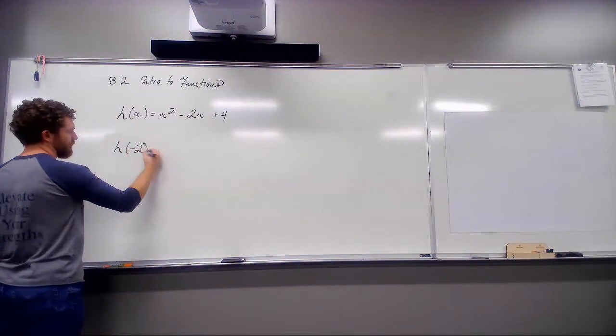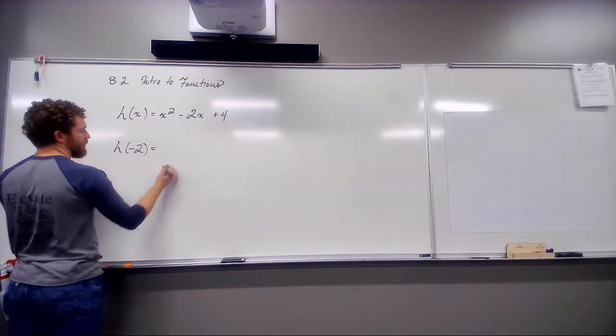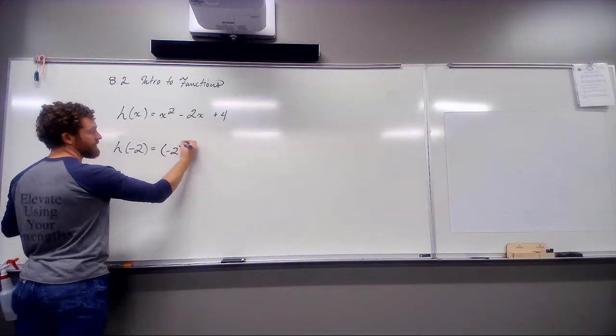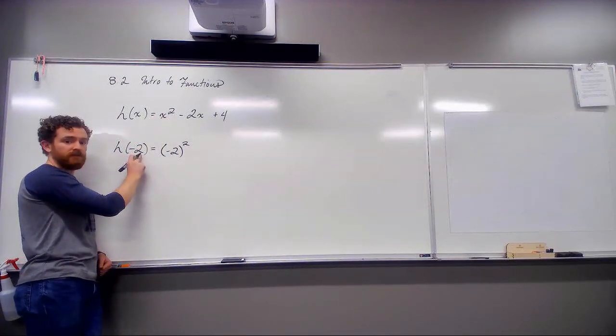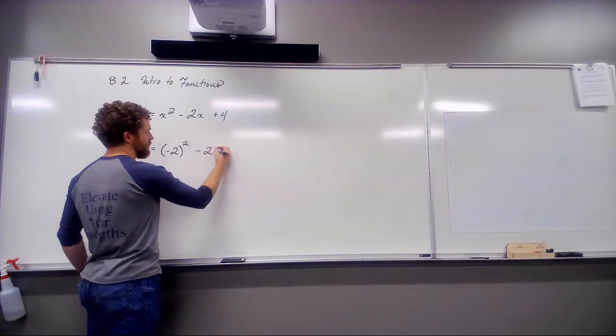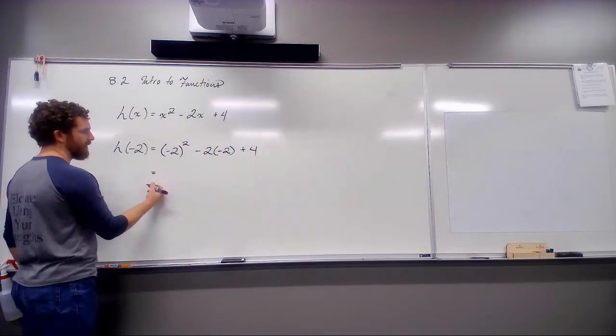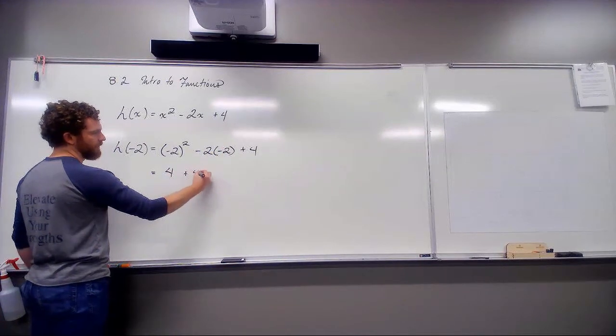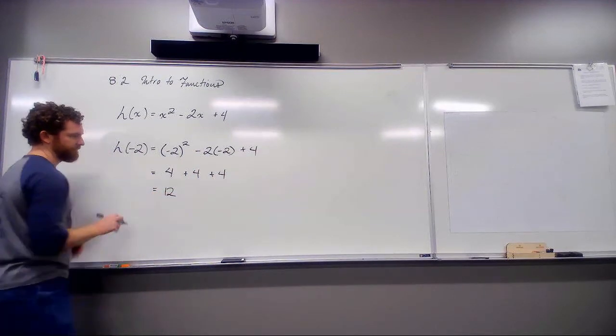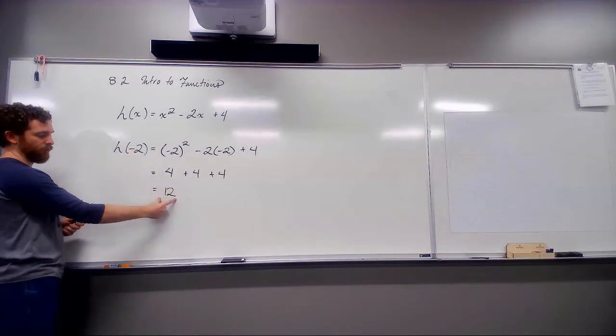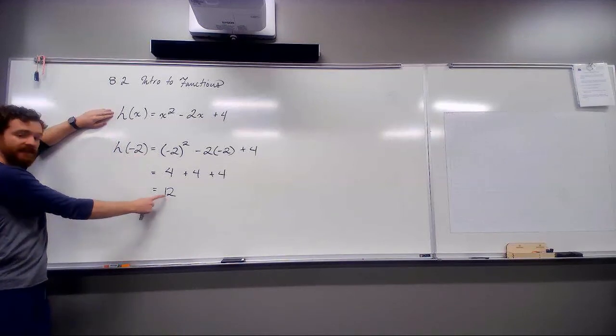So, let's do h of negative 2. I swap this x out for negative 2. So, let's swap all of these out for negative 2. So, notice I put the parentheses on this negative 2. So, that entire x is squared. So, I need the entire negative 2 to be squared. Minus 2 times negative 2 plus swapping that x out for negative 2. So, I can evaluate this and say, I've got 4 plus 4 plus 4 plus 12. So, I have the ordered pair negative 2 to 12. My function h evaluated at input negative 2 is equal to 12.